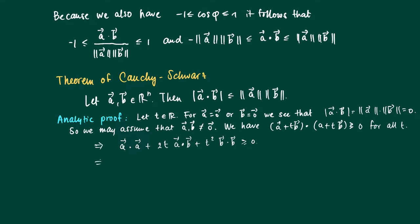This expression is at least 0 — it could equal 0. Since b is a non-zero vector, the inner product of b with itself is greater than 0, so we may divide by it — this is essentially the length of b squared. Dividing through, we get 2 times the inner product of a and b divided by the length of b squared, times t, plus the inner product of a with itself, plus the inner product of a with b divided by b with b. This is still at least 0.